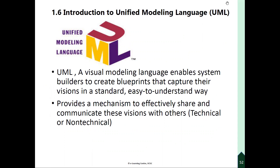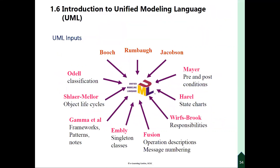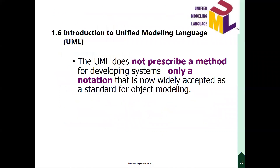Using a standard is an advantage. UML directly unifies the methods of Booch, Rumbaugh, and Jacobson, as well as the best ideas from several other methodologies. UML does not prescribe a method for developing systems, only a notation that is now widely accepted as a standard for object modeling.